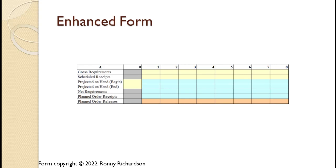The screen shows the enhanced form we will be using for these tutorials. This enhanced form is copyrighted by Ronnie Richardson, All Rights Reserved. There are three main enhancements. First, both the inventory at the beginning and end of each period is shown. This adds no new information, since the beginning inventory in any period is just the ending inventory from the prior period, but it does make it easier to follow the calculations. Second, there is a column for entering the starting inventory. Third, the form is color-coded.